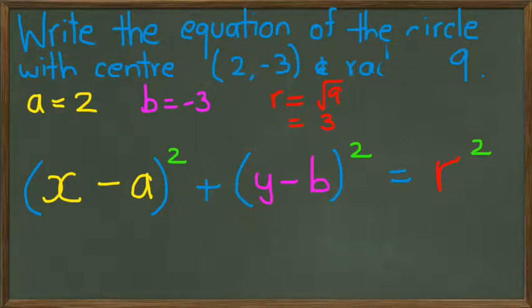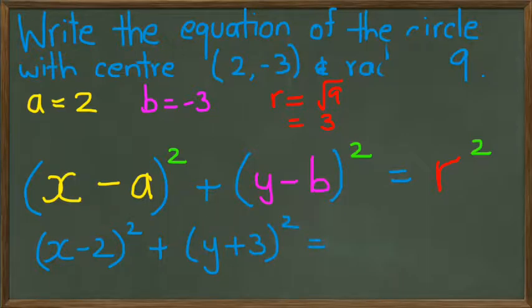So writing our general equation, we can replace all our a, b, and r, and we should have the equation as (x - 2)² + (y + 3)² = 3². Just notice how b is equal to -3 in this case, but when you actually put it into the equation it becomes +3. That's because you've got y - b, and minus and minus of course changes into positive.